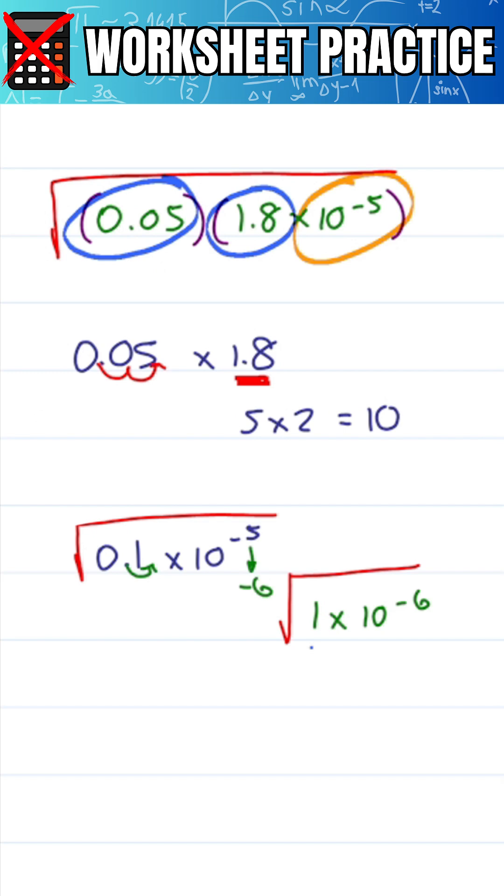The square root of 1 is simply 1 and the square root of a number in scientific notation simply means we raise it to the half power. 10 to the minus 6 raised to the half power simply means multiply by a half or take negative 6 divided by 2 for a final answer of 1 times 10 to the minus 3.